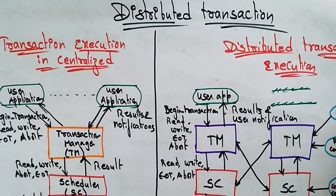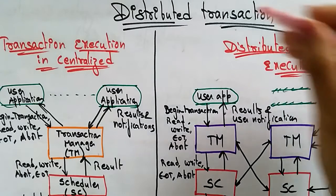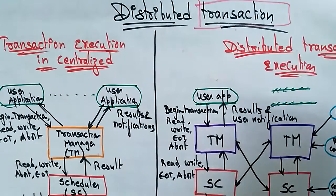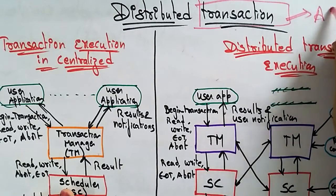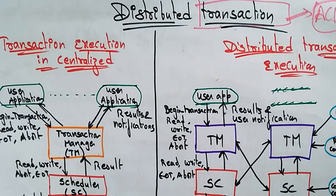Welcome back. Let's continue with distributed systems. The next topic is distributed transactions. You already know the concept of transactions from real life — for example, withdrawing money from an ATM is one transaction, giving something to a friend is a transaction. In database management systems or operating systems, you already know that a transaction follows the ACID property.